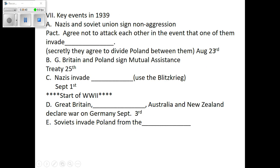Here's 1939, the last year before World War II. Hitler knows he's going to invade Poland. He doesn't want to have the Soviet Union in the war against him, so he signs a non-aggression pact with them. They both agree not to go to war with each other over Poland.